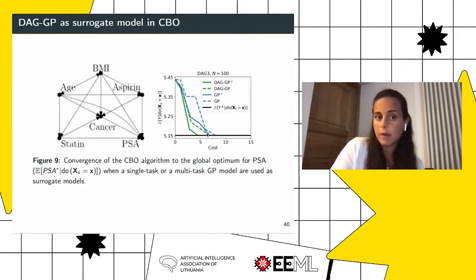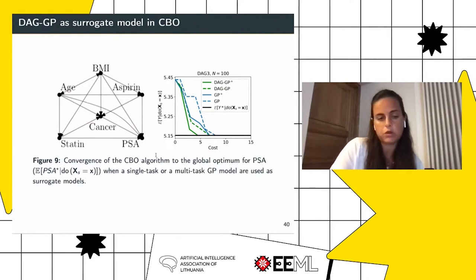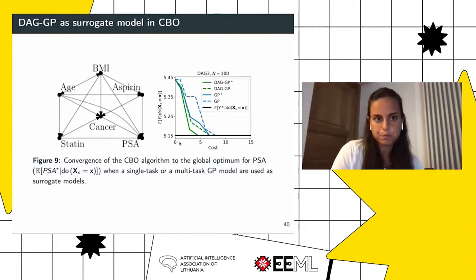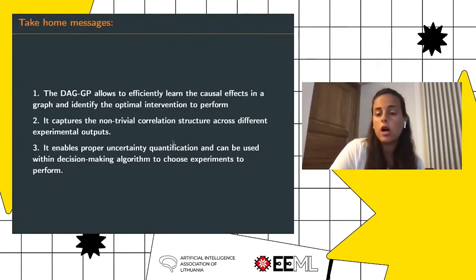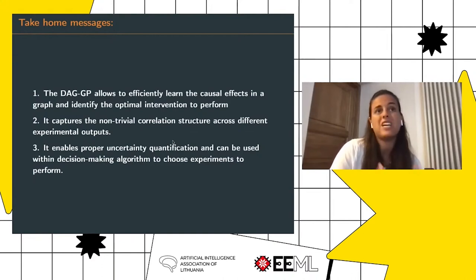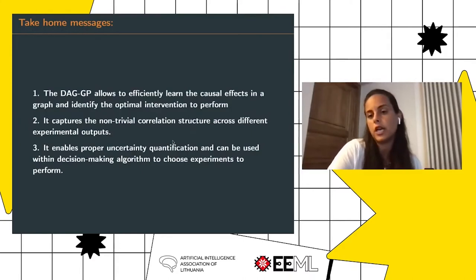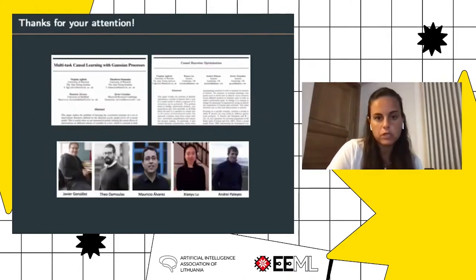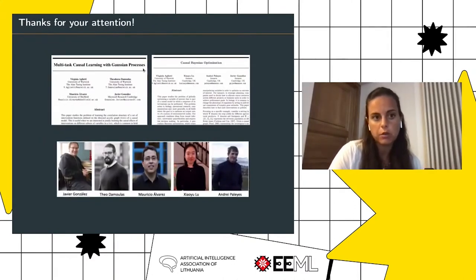This also holds for a real example: we used the multi-task model within causal Bayesian optimization to select the level of statin and aspirin that minimizes prostate-specific antigen. Using a simulator — because we cannot perform experiments on patients — we identify the optimal intervention in around five evaluations. The technical take-home messages are: the DAG GP model allows efficient learning of all causal effects in a graph and faster identification of the optimal intervention within the CBO framework. It captures the non-trivial correlation structure among functions defined on different input spaces and dimensionalities, enabling proper uncertainty quantification — crucial for active learning and causal Bayesian optimization. Code and data for both papers are available online.